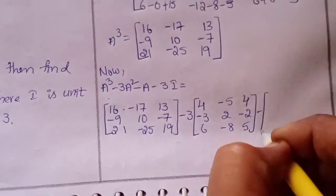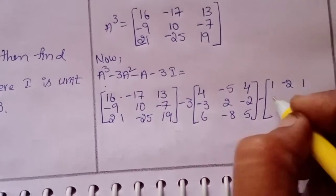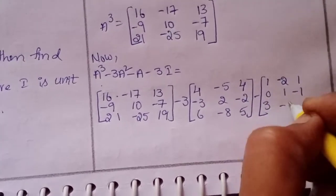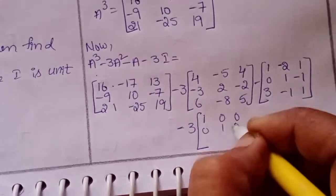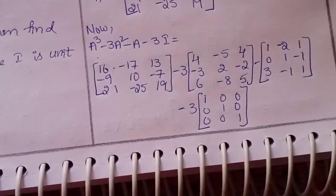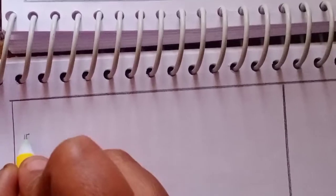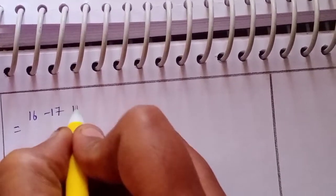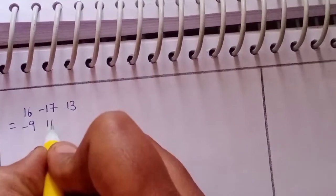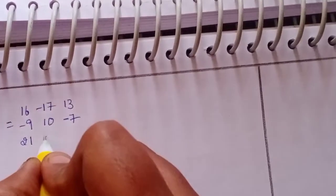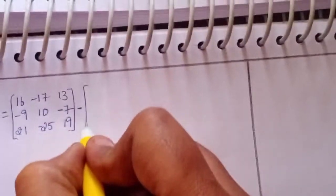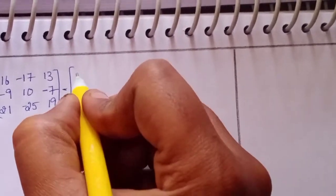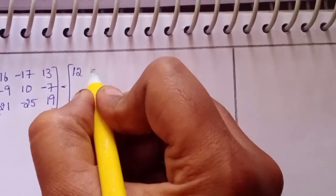Now compute A cubed minus 3A squared minus A minus 3I. That is: [16,-17,13 / -9,10,-7 / 21,-25,19] minus 3 times [4,-5,4 / -3,2,-2 / 6,-8,5] minus [1,-2,1 / 0,1,-1 / 3,-1,1] minus 3 times the identity [1,0,0 / 0,1,0 / 0,0,1], i.e., [3,0,0 / 0,3,0 / 0,0,3].